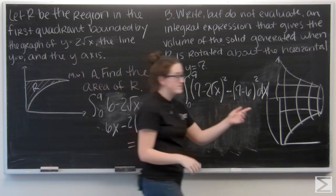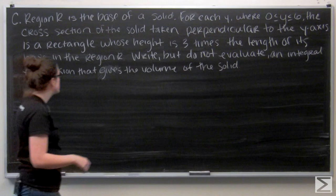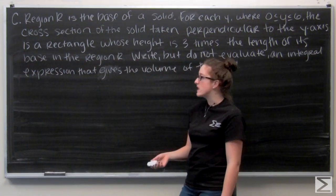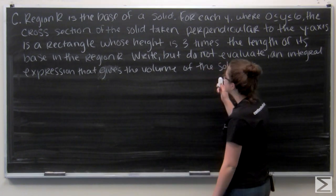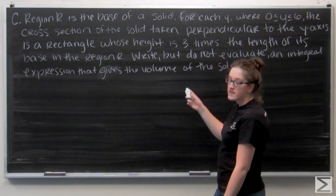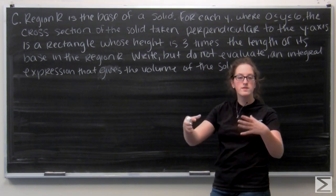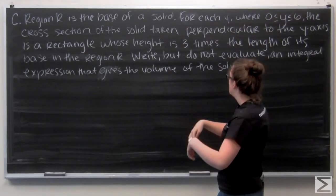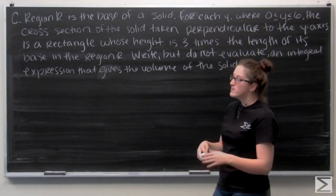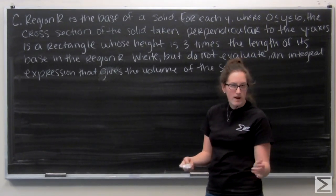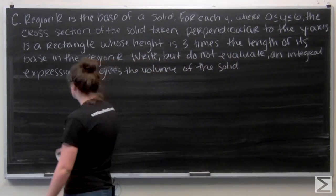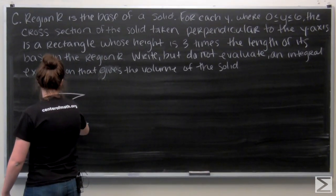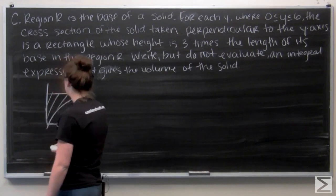Let's go ahead and move on to C. Here we're looking to find the volume of a solid whose cross sections are rectangular solids. R is our base. And then the height is going to be rectangular solids whose height are three times the length of its base. Let me kind of draw that out for you and we can see it a little bit better.